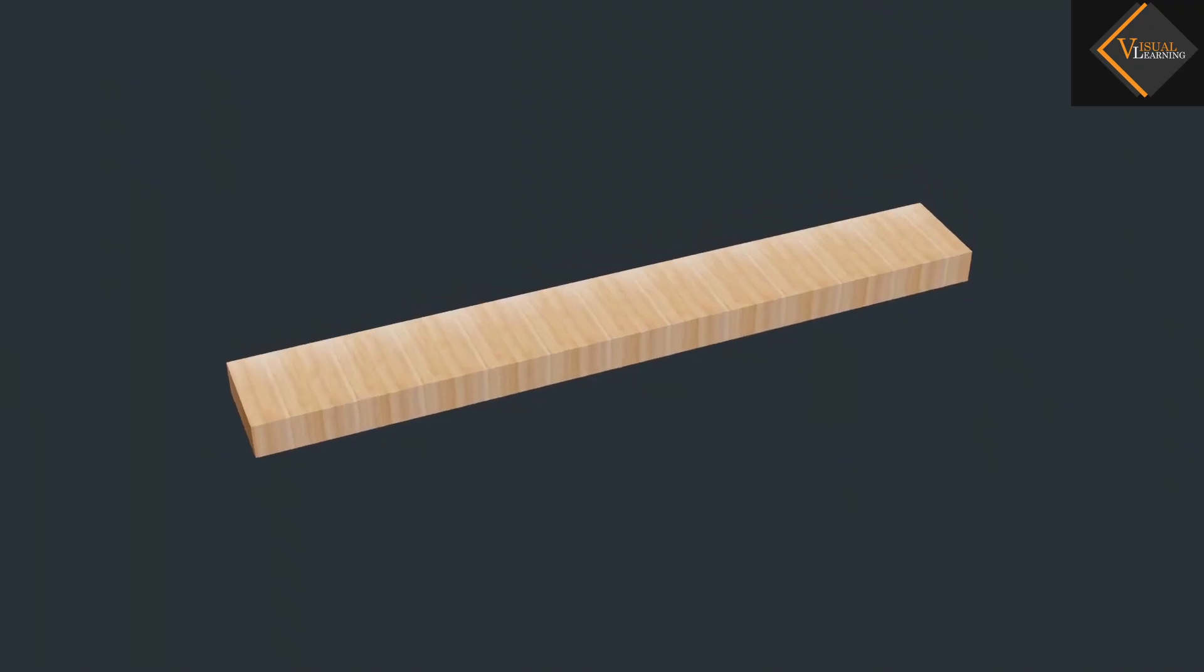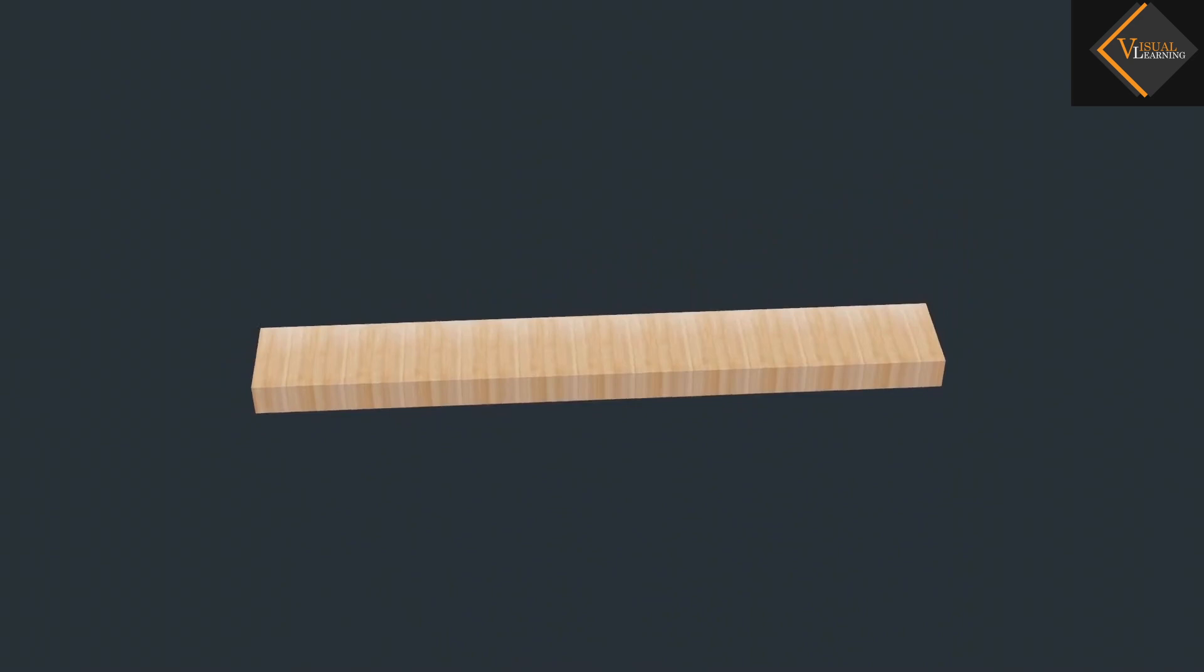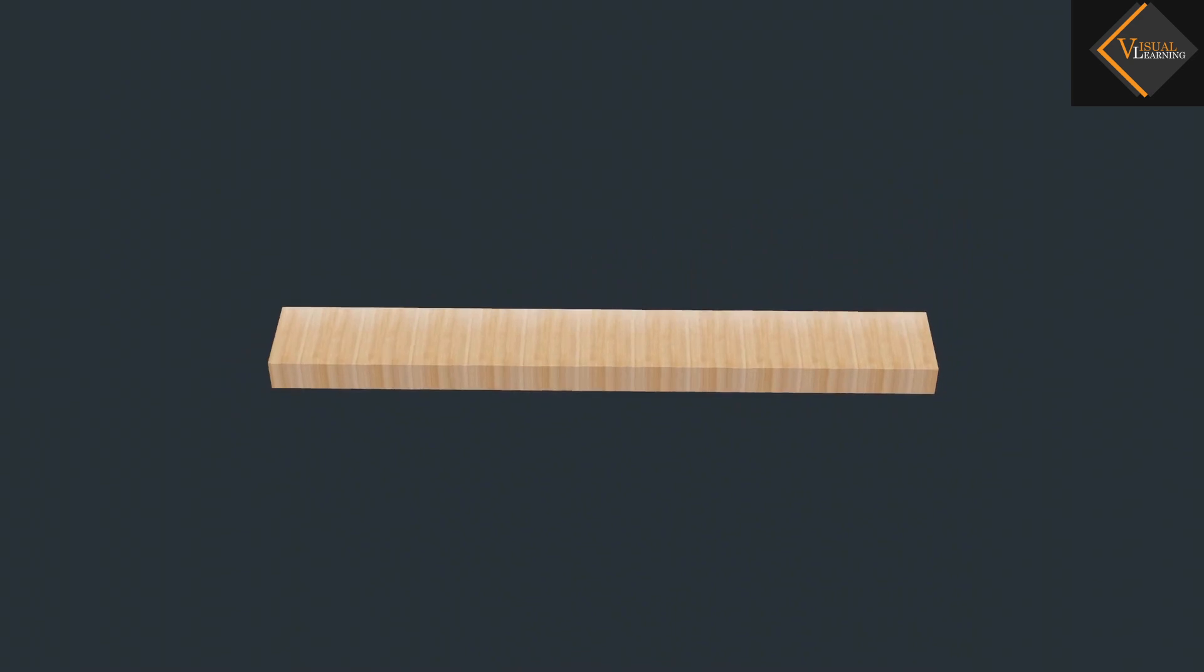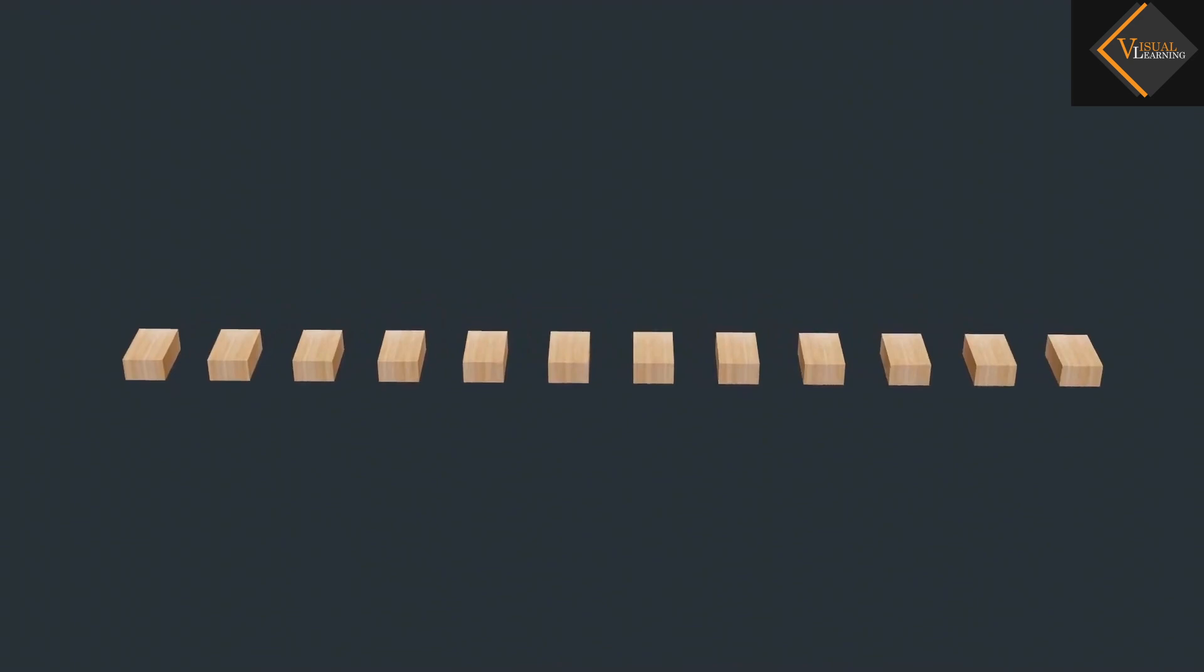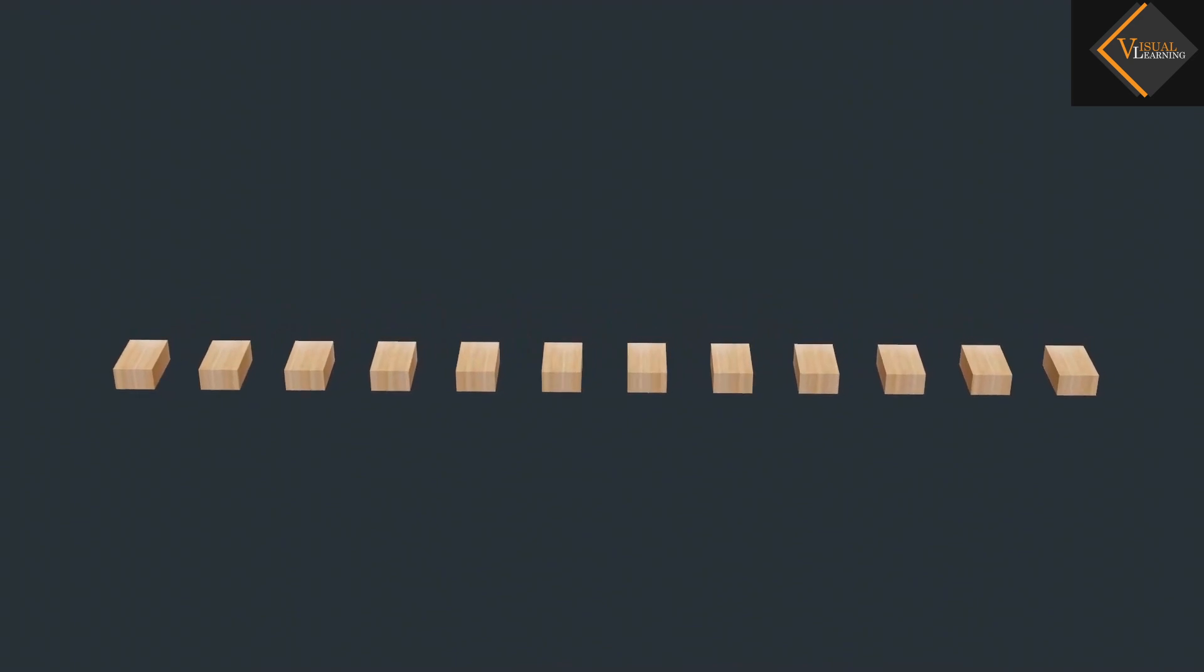To understand this, consider a piece of wood. This piece of wood has a total mass of 12 units. Divide this piece of wood into 12 equal parts. Each part of wood can be considered as a wood mass unit.